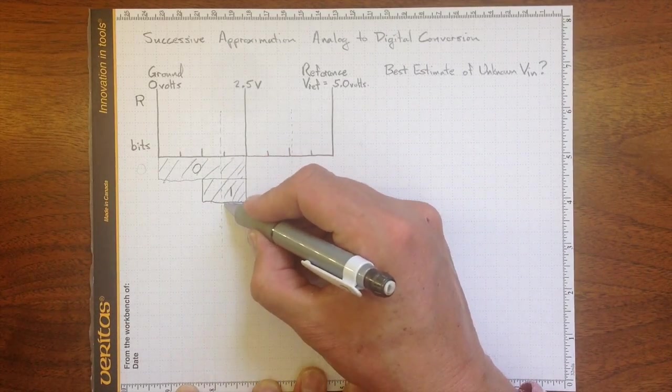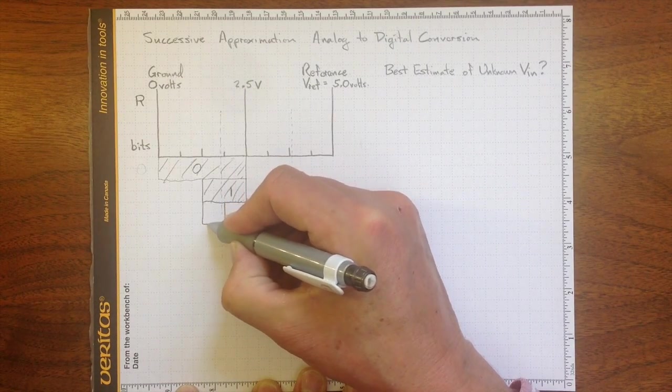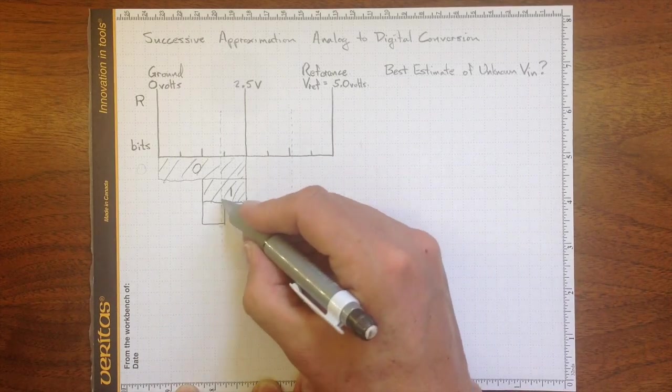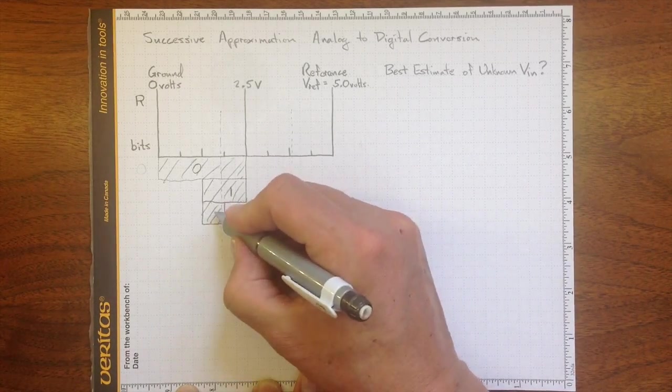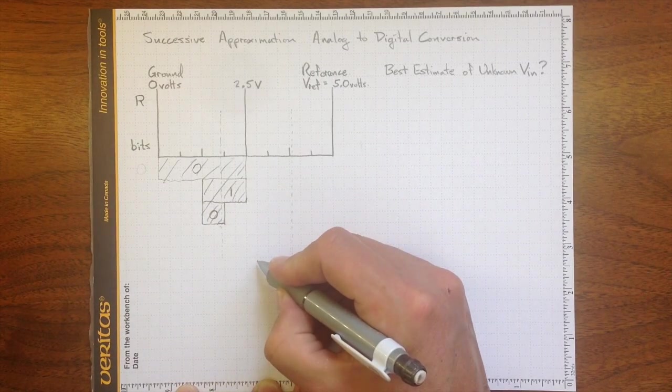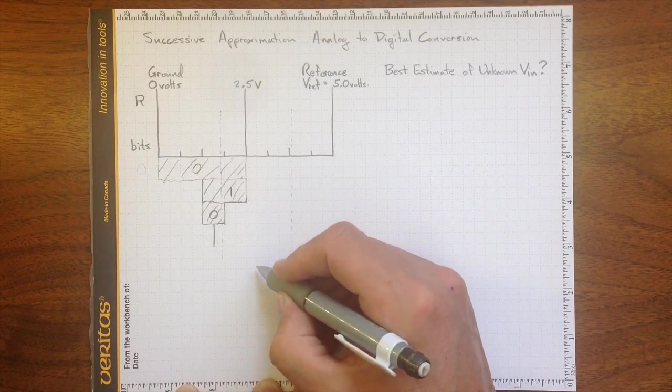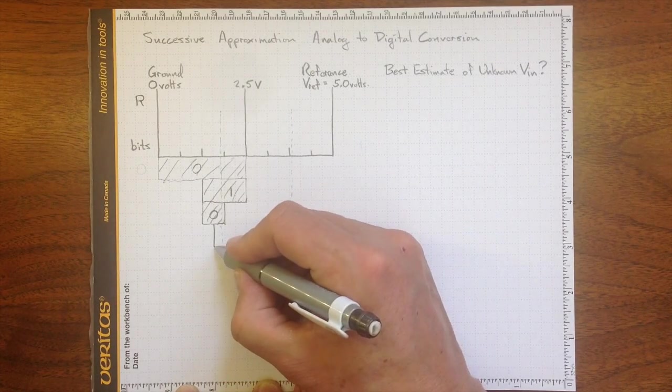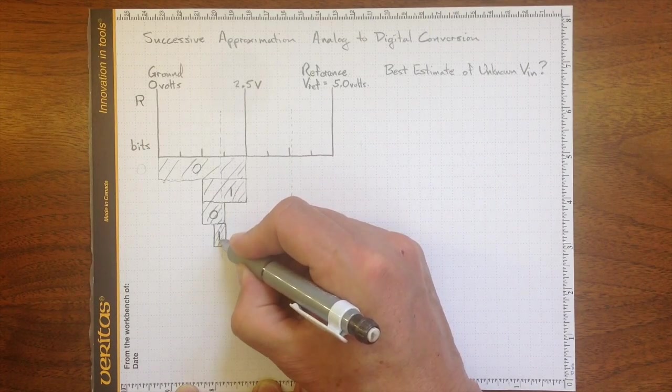And now we'll test against the halfway point again, and we wind up below the halfway point, so we know we're in that region there, another zero. And finally, we'll test against this halfway point, and it's above, so we know we're in this region in here. And that was a one.